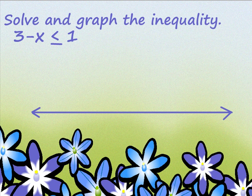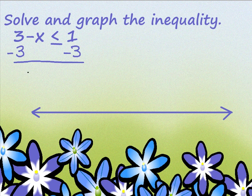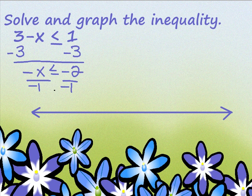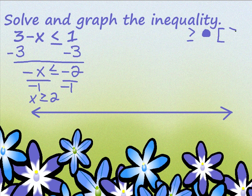Solve and graph the inequality. I'm going to solve this as if it was an equal sign. I'm going to subtract 3 from both sides and get negative x is less than or equal to negative 2. I don't want a negative x — I want a positive x — so I'm going to divide by negative 1. Remember, when we divide by a negative, the symbol changes direction. So I end up with x is greater than or equal to 2.